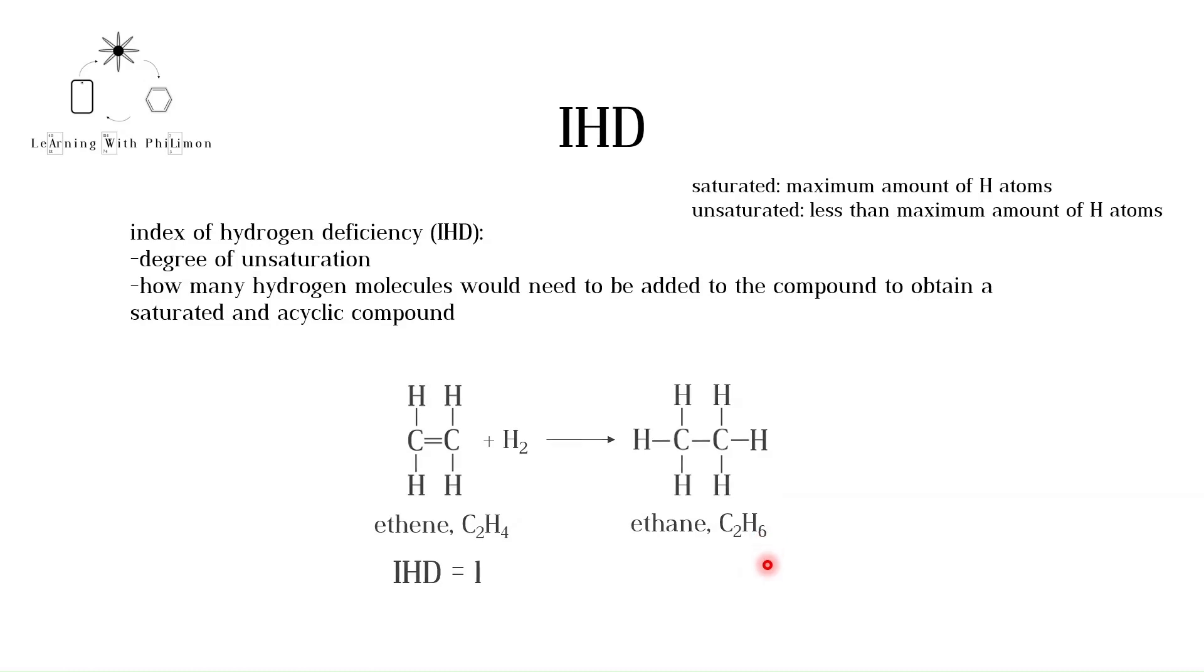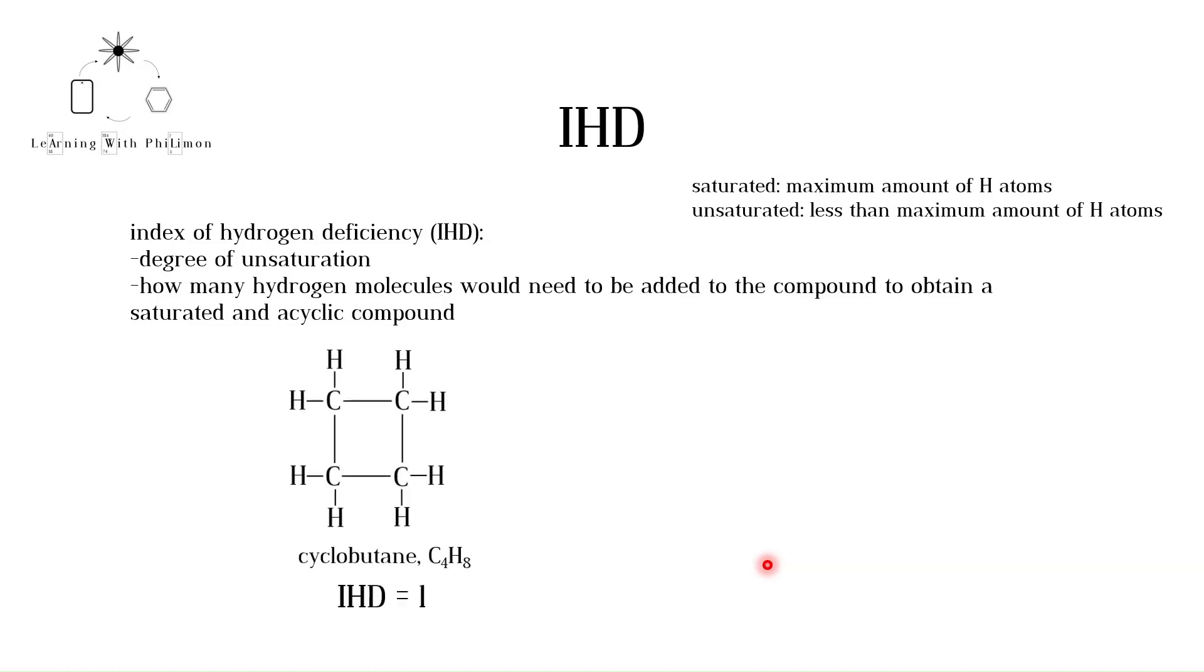Each ring in a compound also counts as one IHD. Cyclobutane has a molecular formula of C4H8. Its acyclic version is butane, C4H10. There is a difference of two hydrogen atoms between the molecular formulae. So cyclobutane requires one hydrogen molecule to become a saturated acyclic compound. Note that we are just looking at this theoretically. We are not describing the reaction conditions necessary to convert cyclobutane to butane.